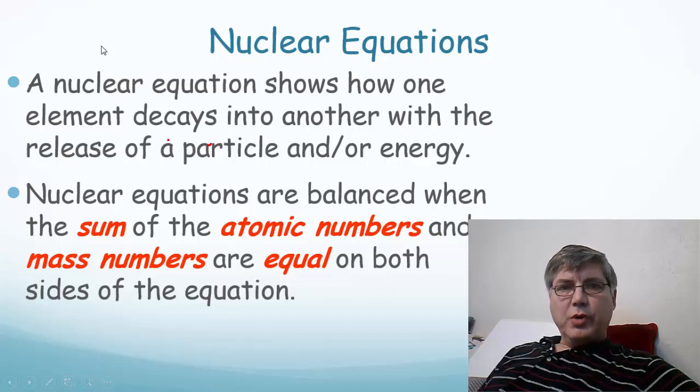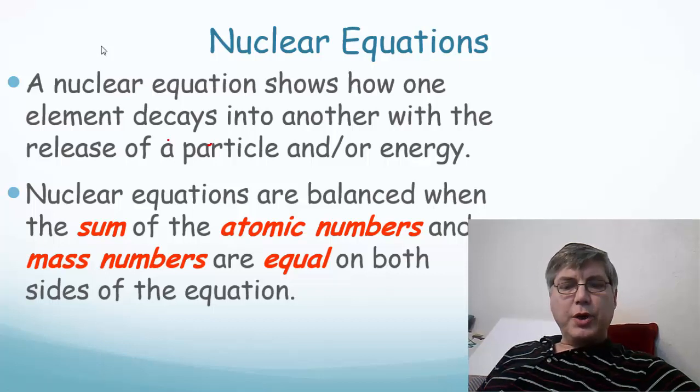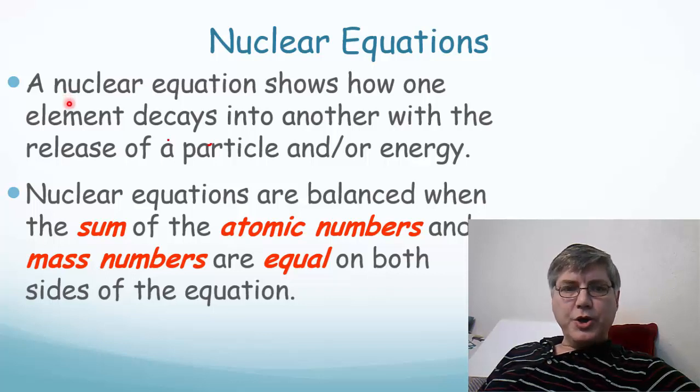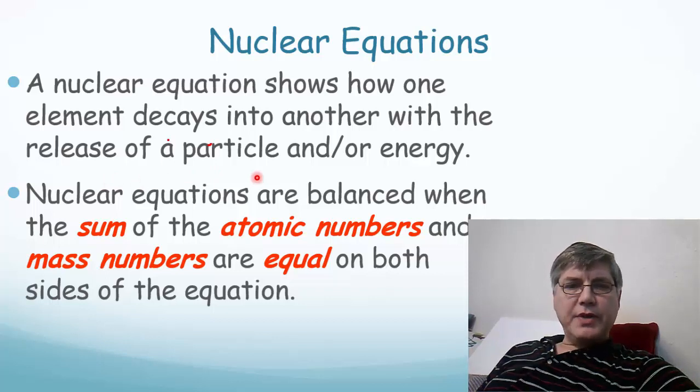Welcome. Today we're going to talk about part two of nuclear chemistry, and that's nuclear equations. A nuclear equation shows how one element can decay into another element with the release of a particle and or energy. We balance nuclear equations when we make the sum of the atomic numbers and the mass numbers equal on both sides of the equation.